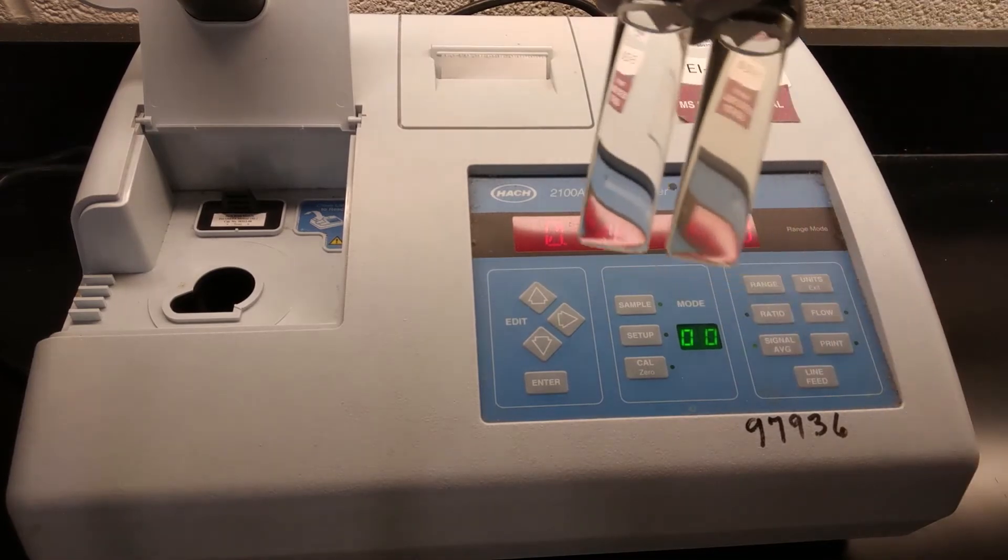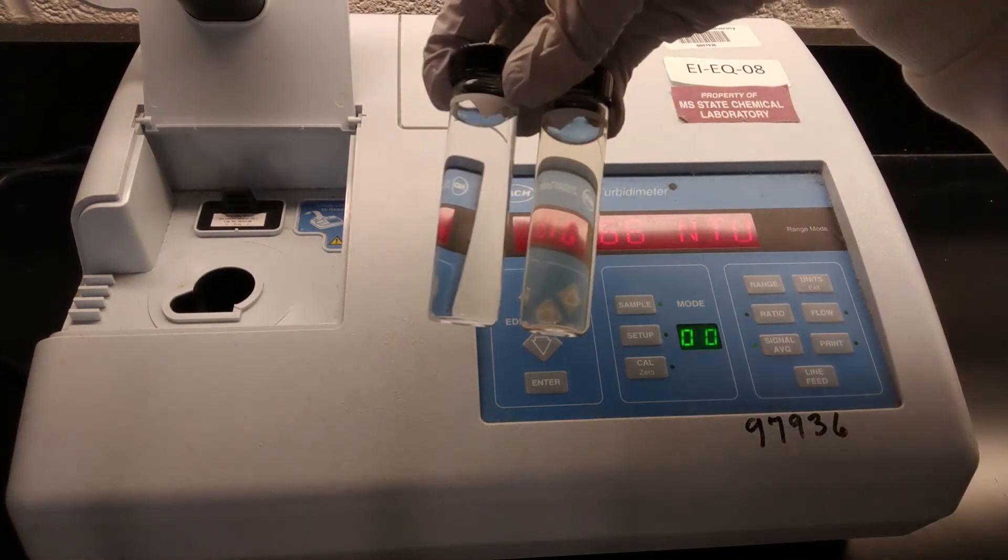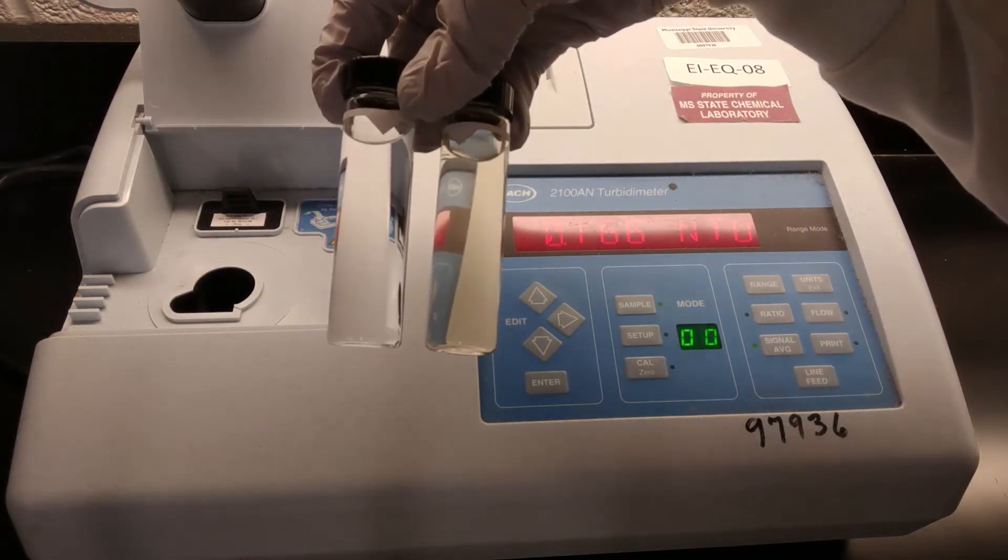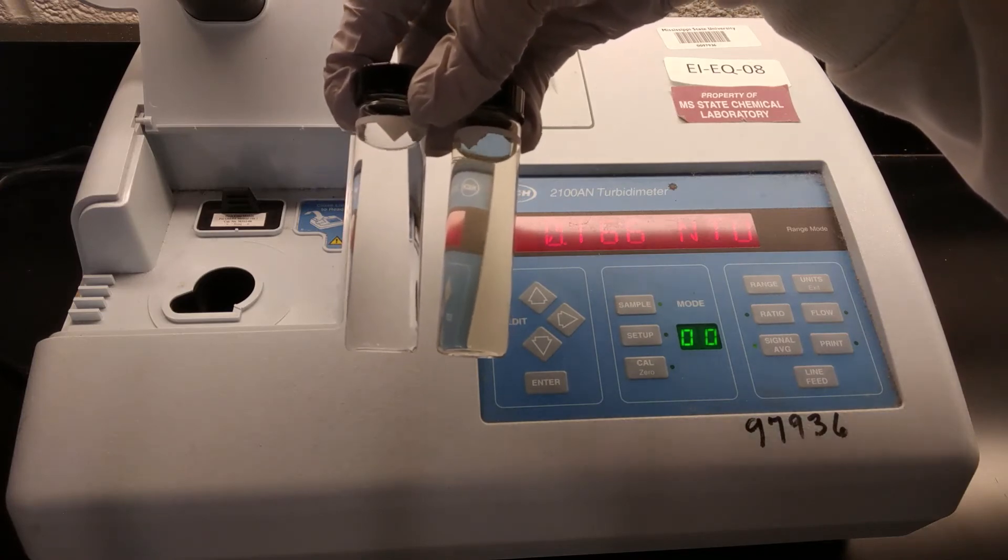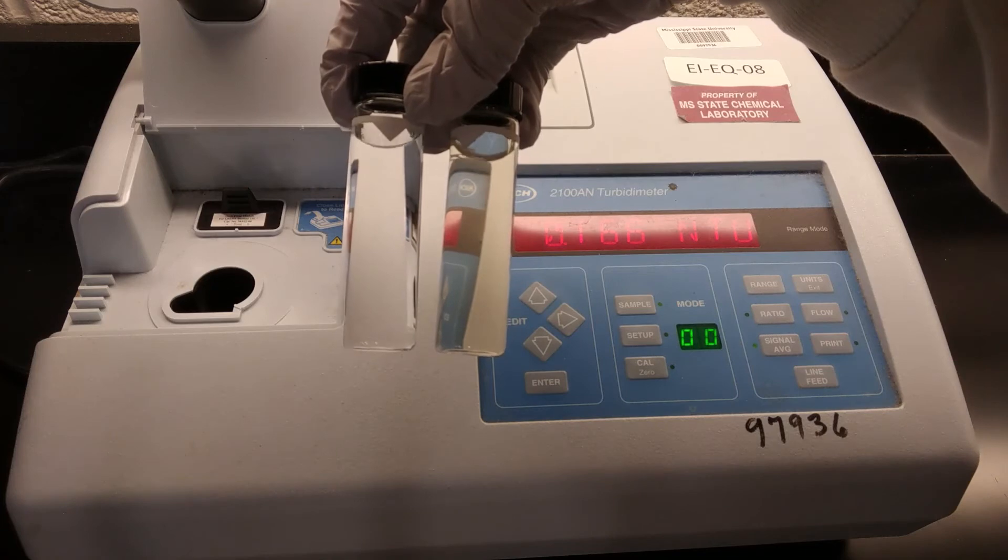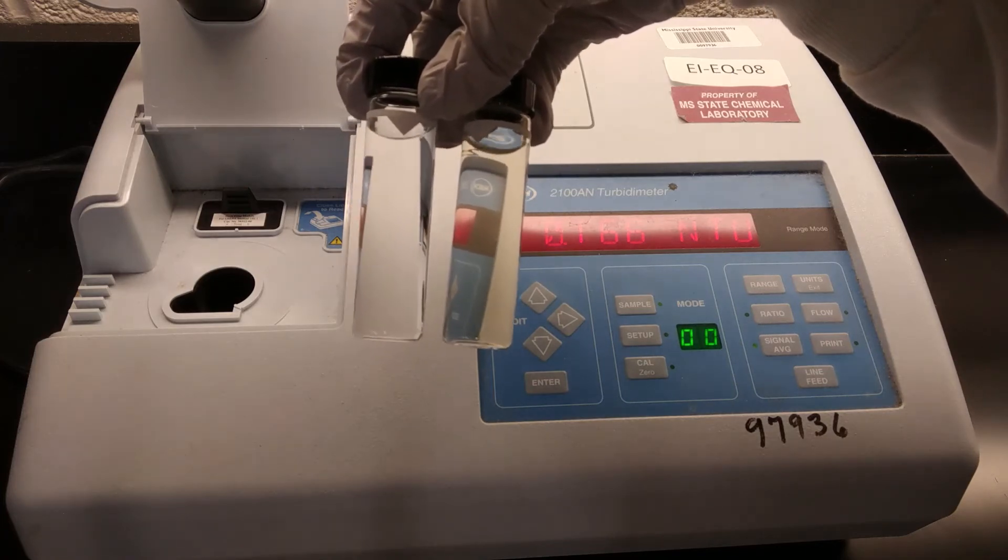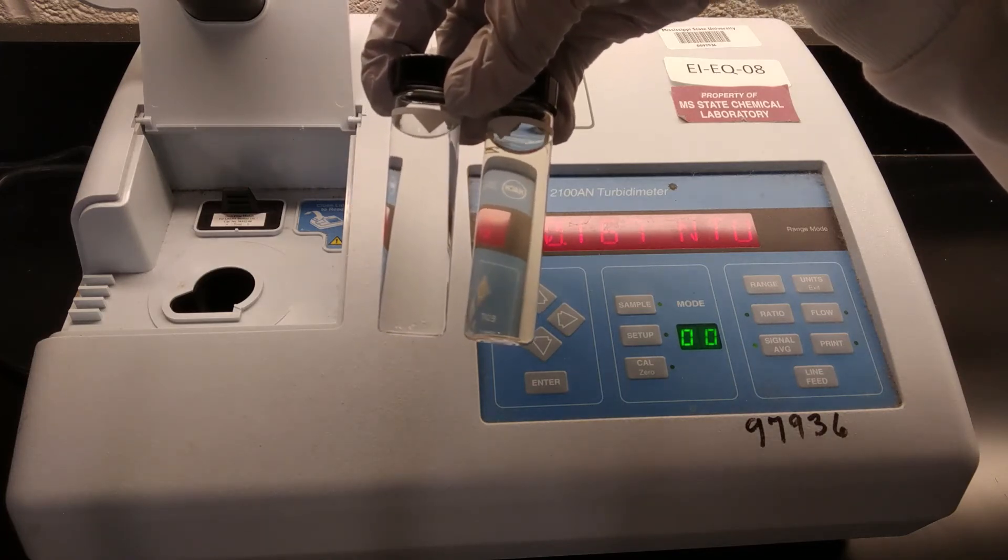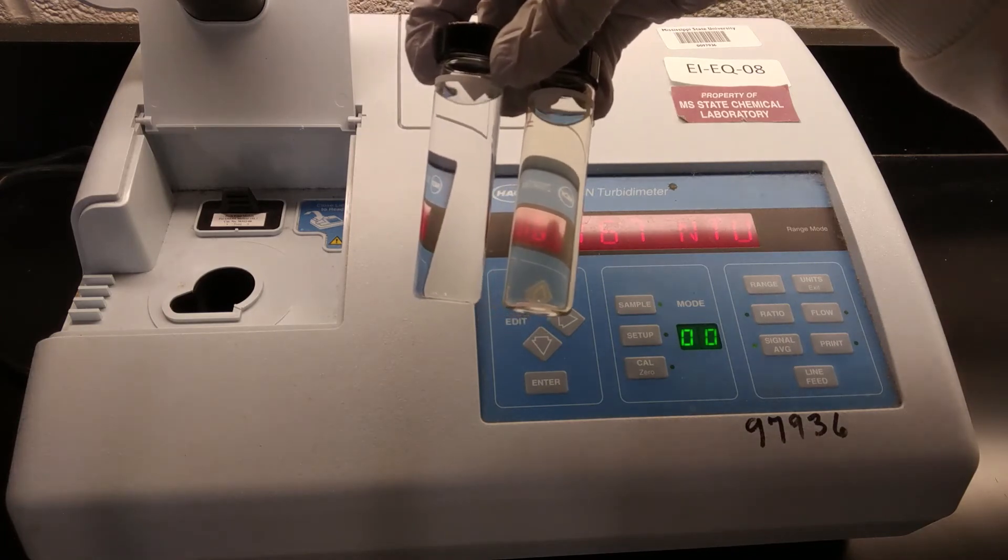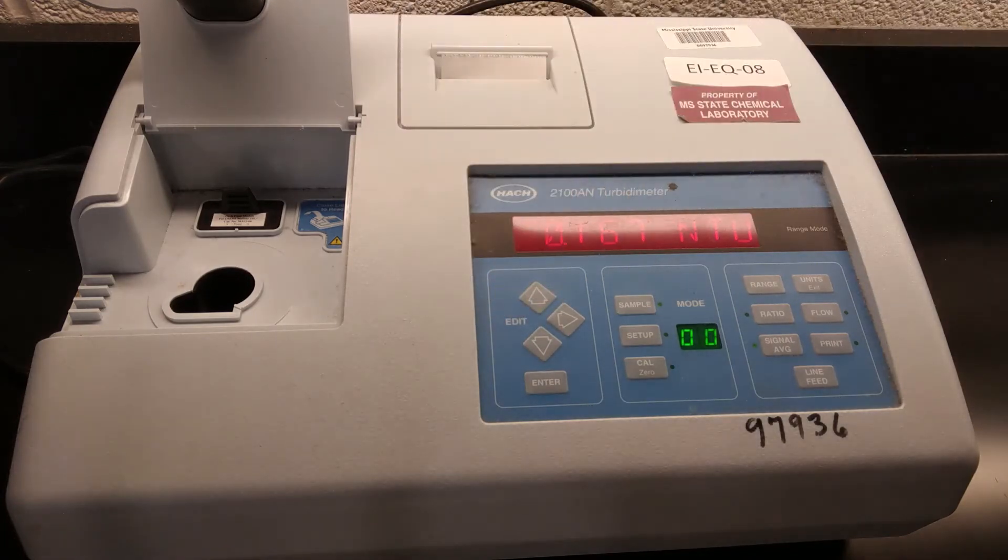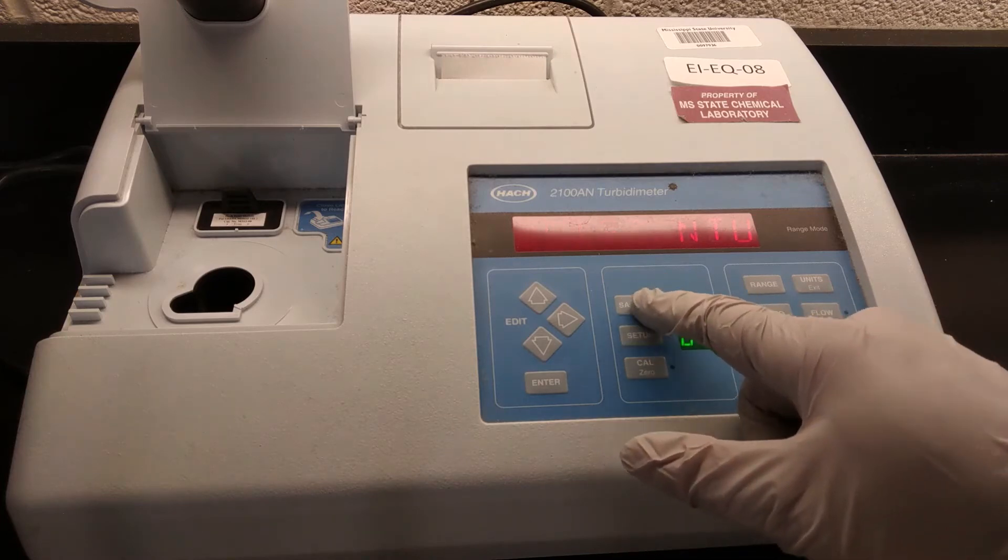So I have my two samples prepared. On the left is our blank. You can see it's pretty clear. On the right is our irrigation or runoff water. It's a little bit yellowy green and has some cloudiness to it. So we should see some difference in the measurements that we get here. So to measure, it's not that different from our calibration. We just want to go to sample mode.